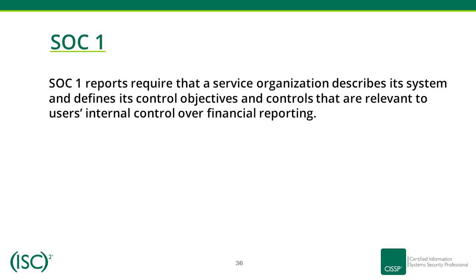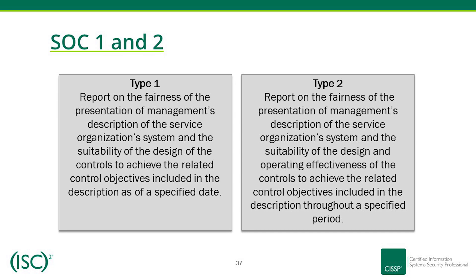SOC 1 reports require that a service organization describes its system and defines its control objectives and controls relevant to users' internal control over financial reporting. SOC 1 and SOC 2 Type 1 reports cover the fairness of the presentation of management's description of the service organization system and the suitability of the design of controls to achieve the related control objectives as of a specified date. Type 2 reports additionally cover the operating effectiveness of the controls throughout a specified period.